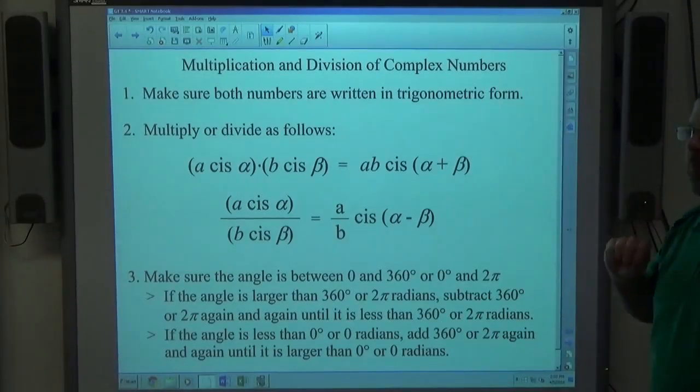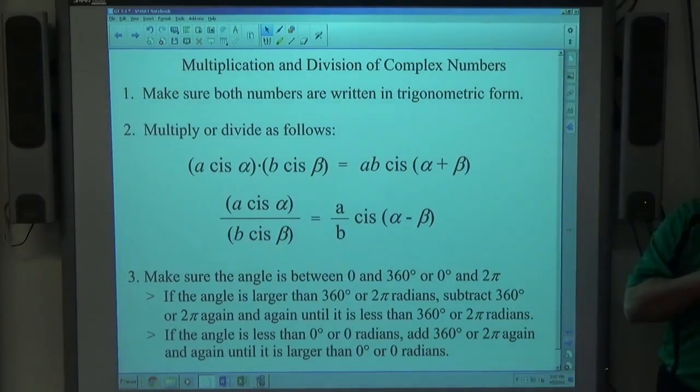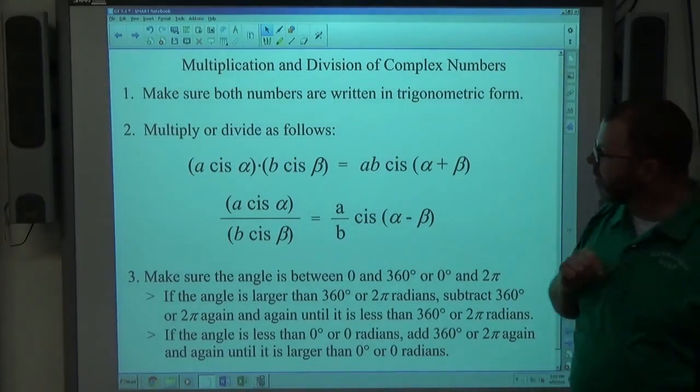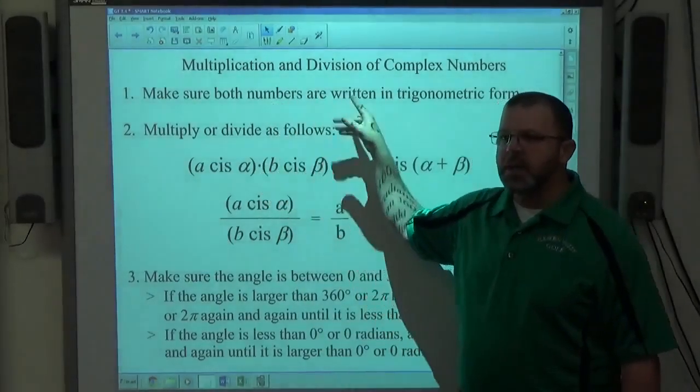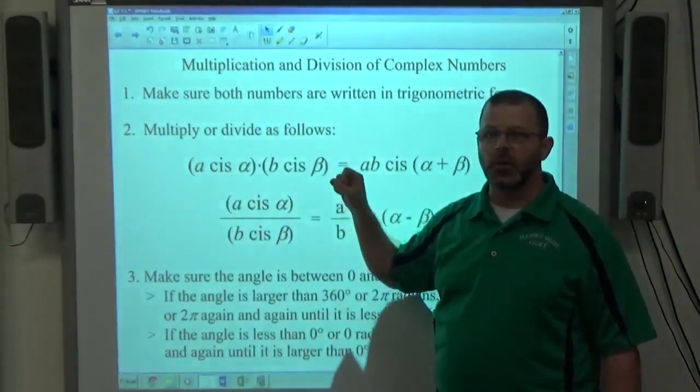So if we're going to multiply and divide complex numbers, again complex numbers being some real number plus some imaginary number, A plus BI. If it's A plus BI, that's called standard form. We want the trigonometric CIS form.